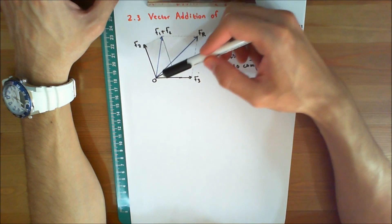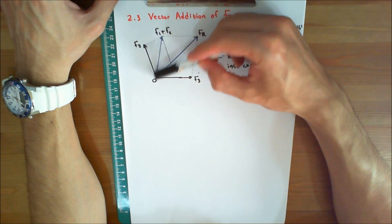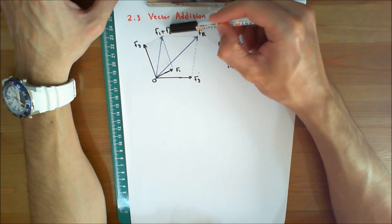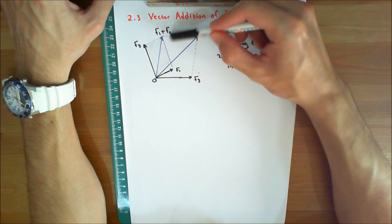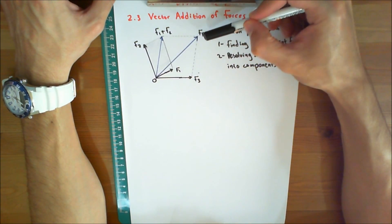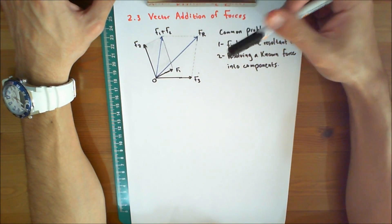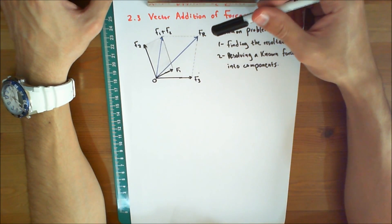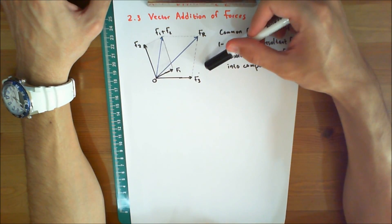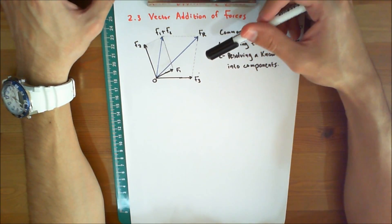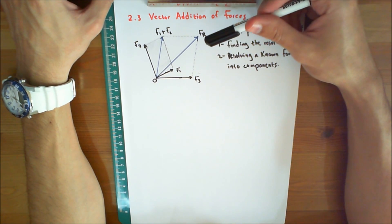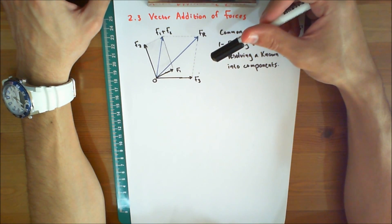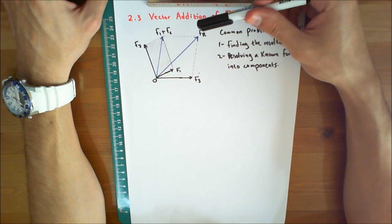This can be done by first adding F1 to F2 to find the resultant, then adding this to F3 to find FR. Using the parallelogram law to add more than two forces often requires extensive geometric and trigonometric calculation to determine the numerical values for the magnitude and direction of the resultant.